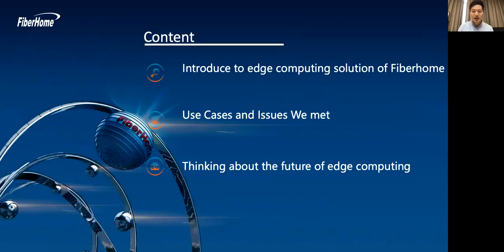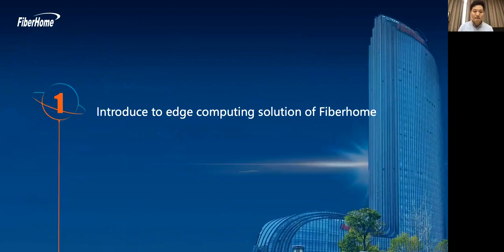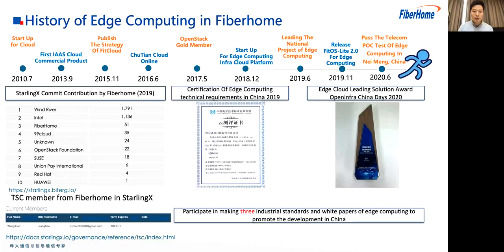Today we are going to talk about the edge computing solution of Fiberhome, use cases and the issues we met, and thinking about the future of edge computing. Fiberhome is an international information and communication network products and solutions provider. We have been focused on cloud since 2010, and in 2018 we started to research and develop the edge computing infrastructure cloud platform. In 2019, Fiberhome joined the StarlingX community to make contributions and also lead the China national project of edge computing research.